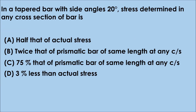Question No. 13: In a tapered bar with side angles 20 degrees, stress determined in any cross section of that bar is — Option A. Half that of actual stress, B. Twice that of prismatic bars of same length at any cross section, C. 75% that of prismatic bars of same length at any cross section, D. 3% less than the actual stress. The correct answer is option D. Stress determined in any cross section of that bar is 3% less than the actual stress.